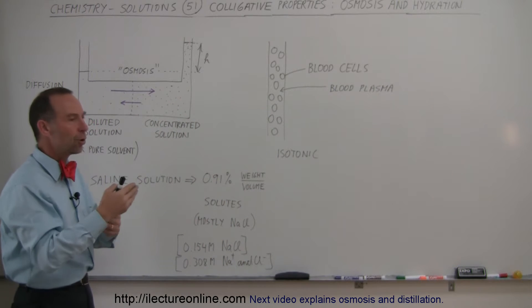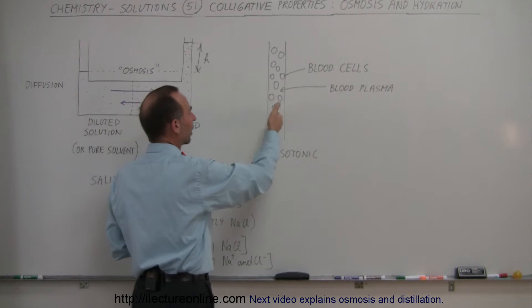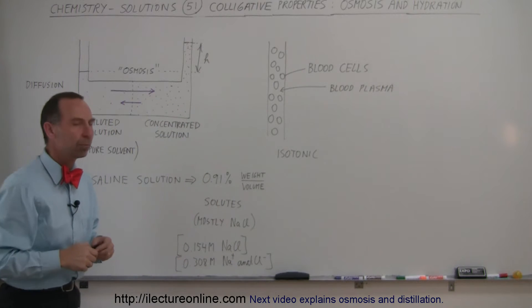So there is no net direction of solvent going back and forth between the blood cells and the blood plasma.